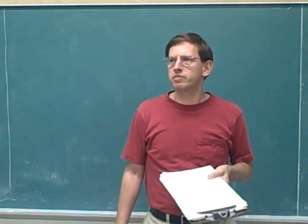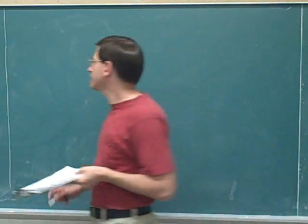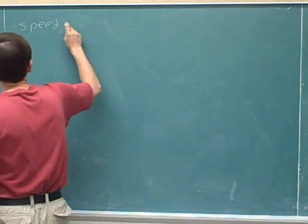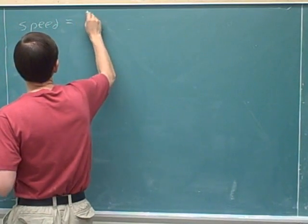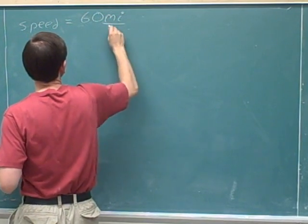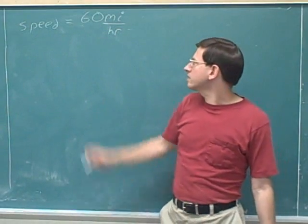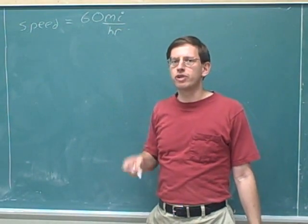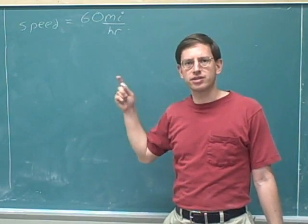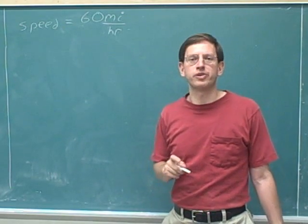Suppose I tell you that somebody is driving at a constant speed of 60 miles per hour. Miles per hour is a ratio unit, so we should be able to use the skills we've just learned to interpret this information. How do we interpret a constant speed of 60 miles per hour?